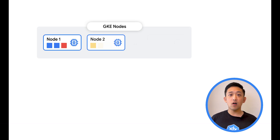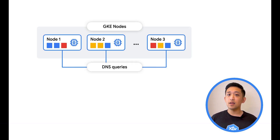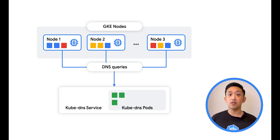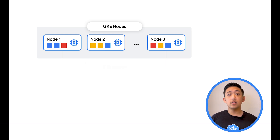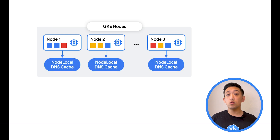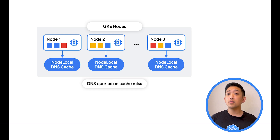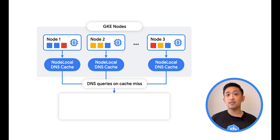Cluster DNS also requires attention at large scale. By default, Kube DNS runs as a deployment in your GKE cluster with its own autoscaler. At scale, this can become a bottleneck, as more workloads in the same cluster generate more request load to this Kube DNS service. In GKE, you can enable Node Local DNS Cache, which deploys a daemon to each node to serve cached DNS responses to pods. This relieves pressure on Kube DNS, as only cache misses hit the centralized service.